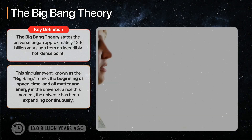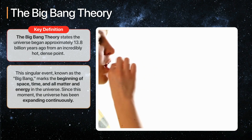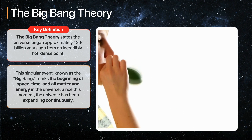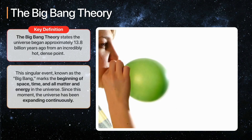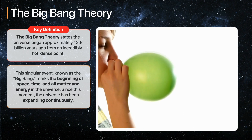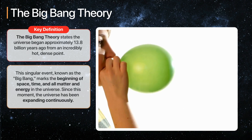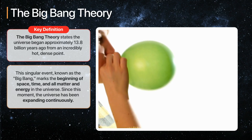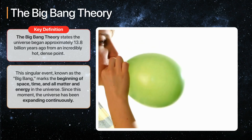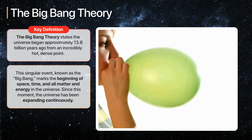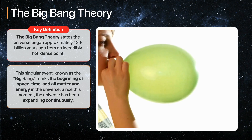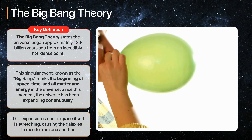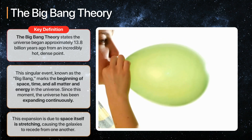To visualize the expansion, imagine the universe as the surface of a balloon. As the balloon inflates, any two points on its surface move farther apart. Similarly, in the universe, galaxies drift away from each other as space itself expands. Importantly, this expansion isn't due to galaxies moving through space. Rather, space itself is stretching, causing the galaxies to recede from one another.